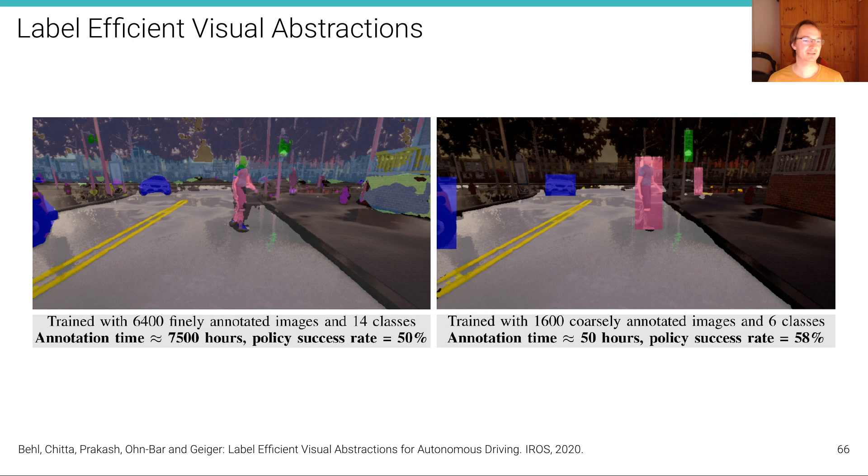In order to even obtain a better policy success rate compared to a situation where we have very detailed class labels, but then the model, the visual abstraction model, gets very confused and it's not able to—the policies they're not able to drive well despite having spent significantly more time in annotating these images.